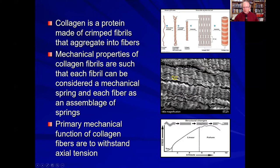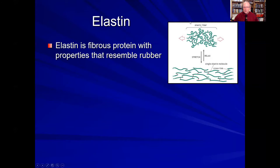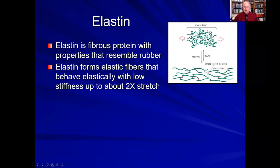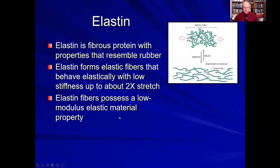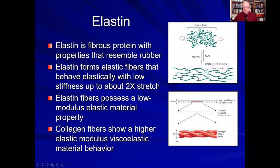The primary function of these collagen fibers is to withstand axial tension in our ligaments and tendons. Elastin, though, is a little different. Elastin is made of somewhat disorganized fibers that will stretch when placed under load, and they more resemble a rubber. Elastic fibers will stretch up to about two times their length with a low stiffness. Once we get past two times stretch, they become stiffer, giving the tissues of our body a little more elastic recoil. Elastic fibers are a low modulus material — they will stretch more easily for a given load — whereas collagen fibers have a higher elastic modulus and are harder to deform.